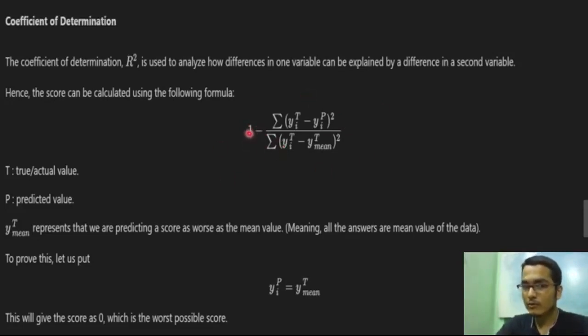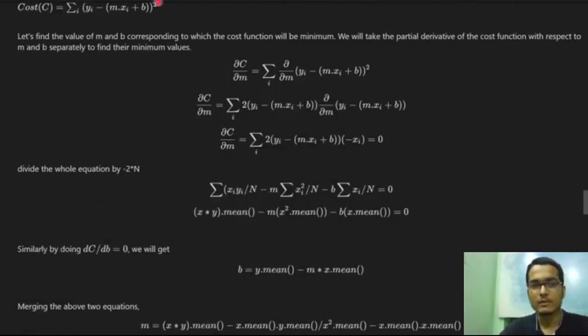As our score will go close to one, we are going more accurate and we can basically find percentage accuracy by multiplying this entire thing by 100. If we put yp equal to yt mean, we will get one by one, it will cancel out. If both numerator and denominator are same, we will get a zero score. One minus one equals zero. So that's the worst thing which we can do in this algorithm.